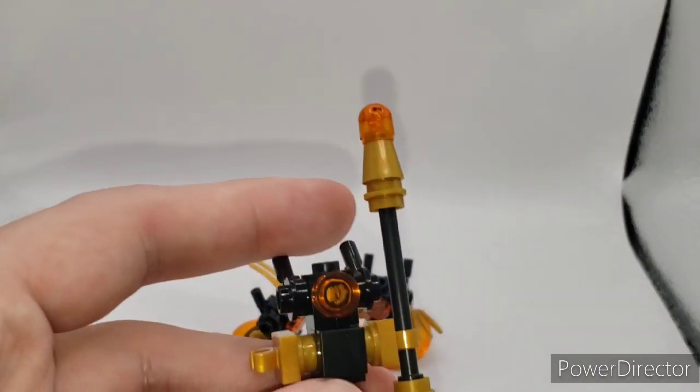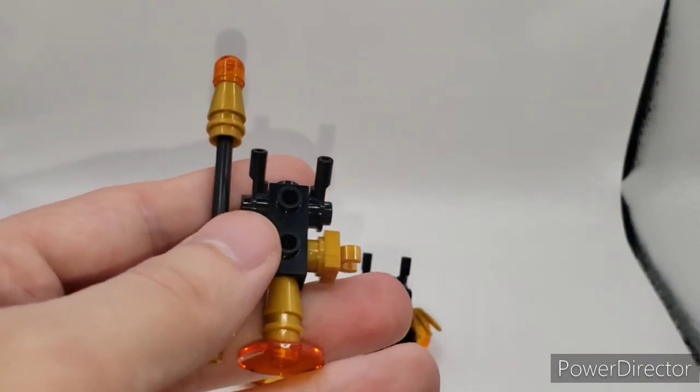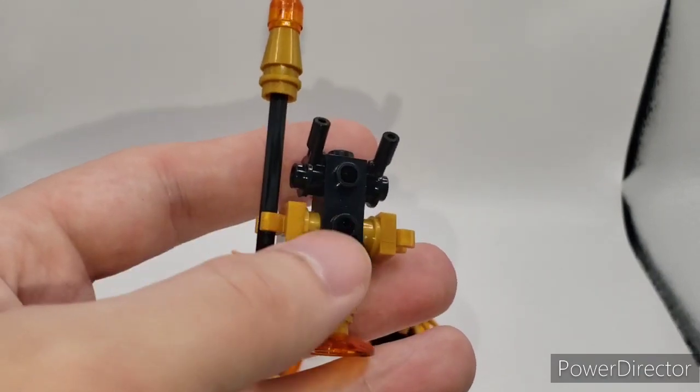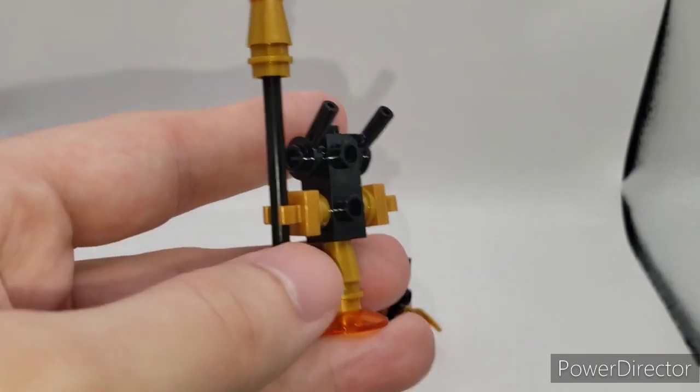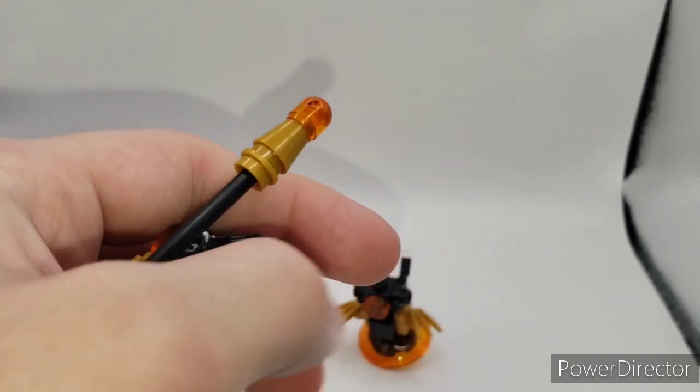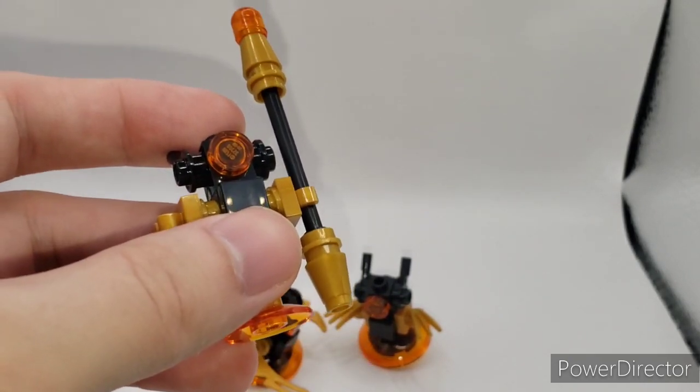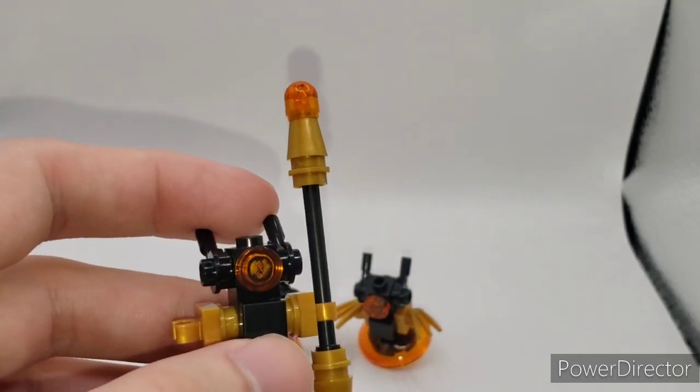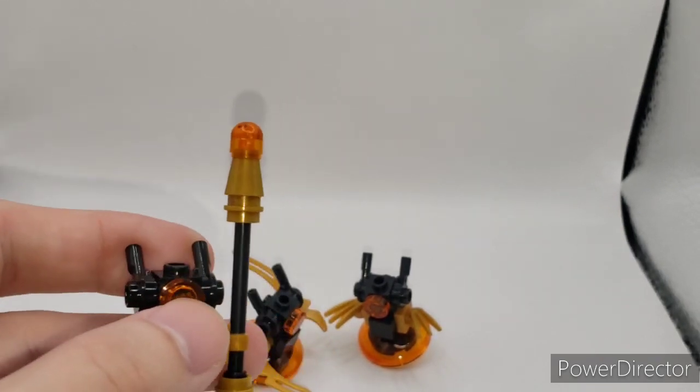So Kai's is just a generic build, honestly. It's two Travis bricks with some pillars and stuff like that to build it up. Then for the spear, you have the gold pieces with the orange round stud on top, and you have orange eyes on all three of these.